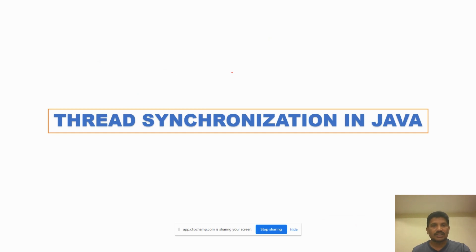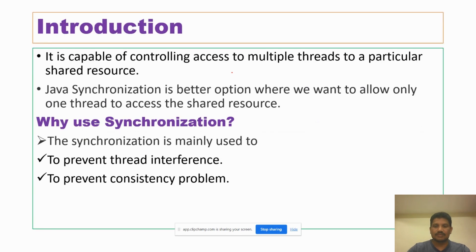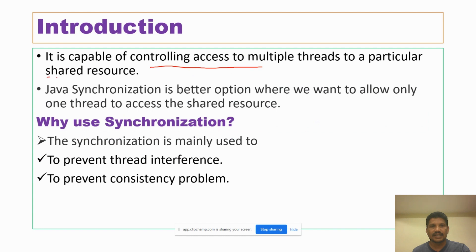I will explain about thread synchronization in Java programming. Synchronization is about controlling access of multiple threads to a particular shared resource. When two or more threads try to access the shared resource at the same time, the data may be inconsistent or provide the wrong result. That's why, to overcome that problem, we should use synchronization.